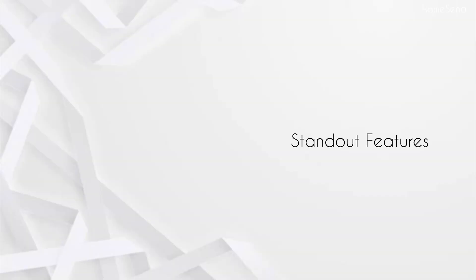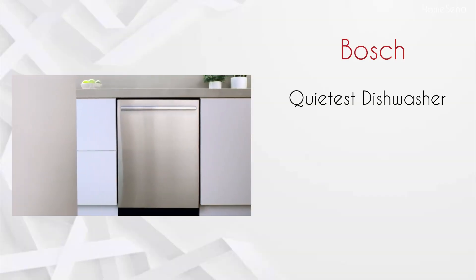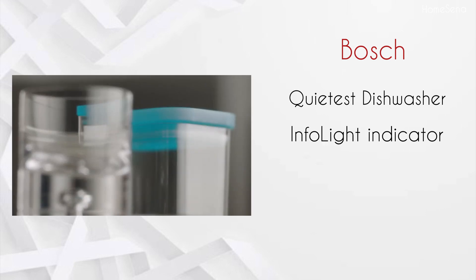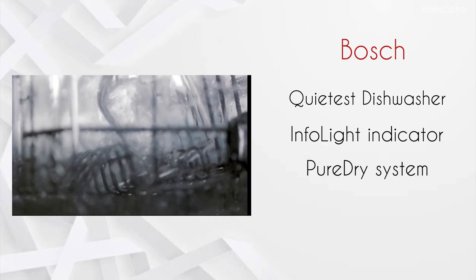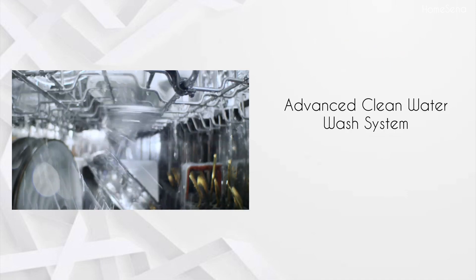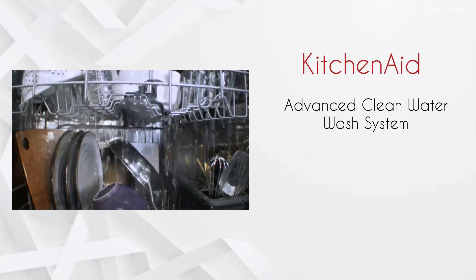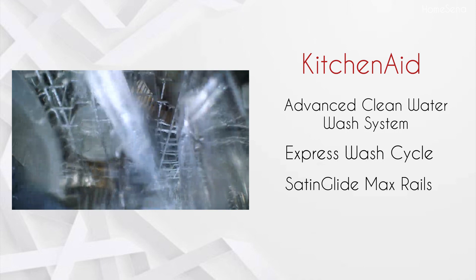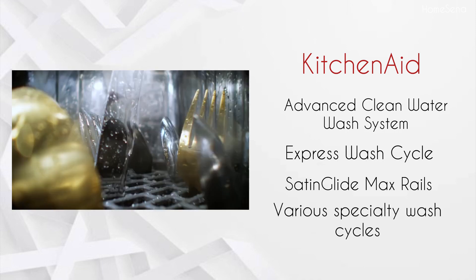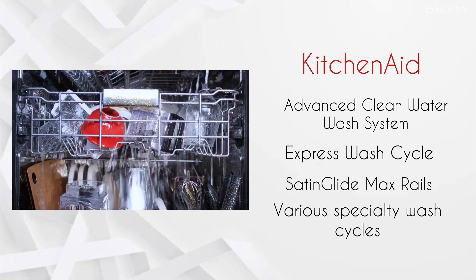Bosch's standout features include being the quietest dishwasher brand in the U.S., the InfoLight indicator, pure-dry system with a sanitize option, and precision wash. Meanwhile, KitchenAid offers the advanced clean water wash system, express wash cycle, Satin Glide max rails, and various specialty wash cycles. It's a clash of tech versus simplicity.